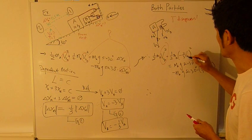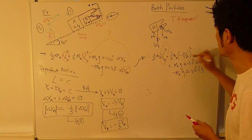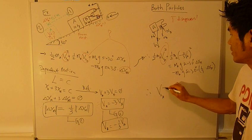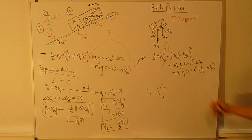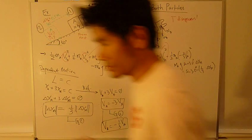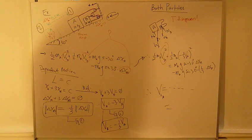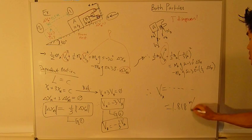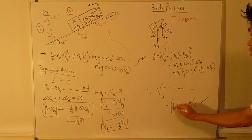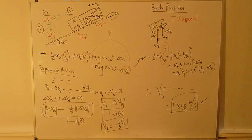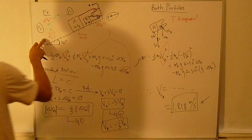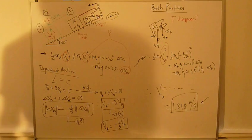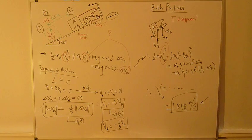So V2, the particle A equals, just plug in numbers and solve. 1.818 meters per second, pointing out this way. So this is the final velocity of particle A at that position. So we have found velocity of A.